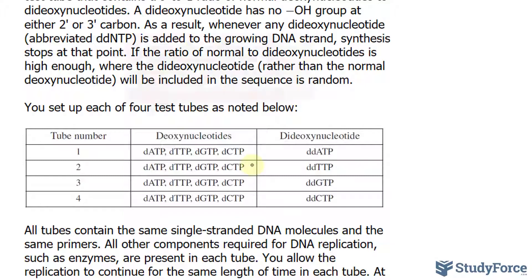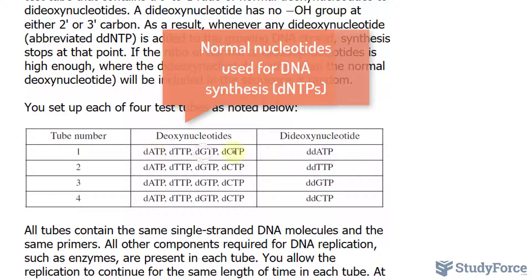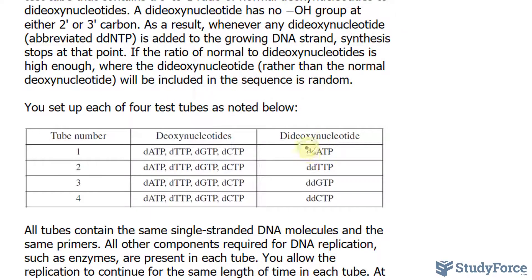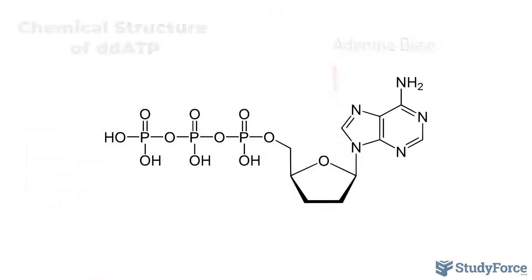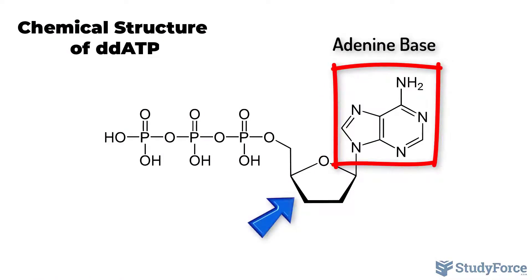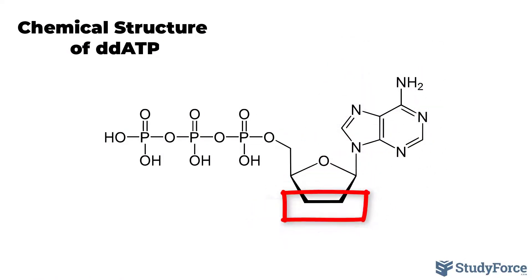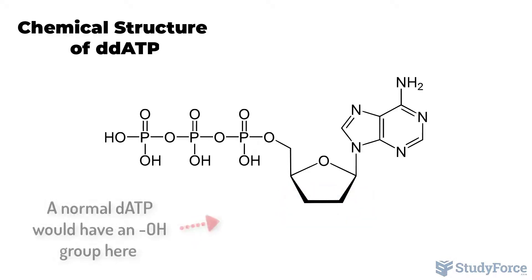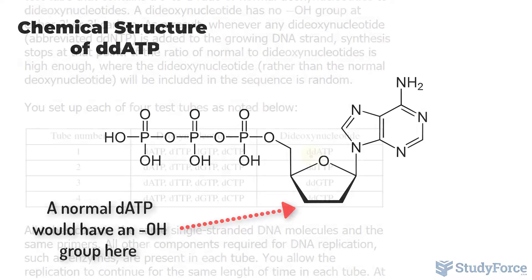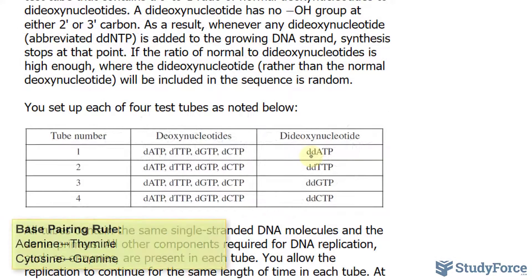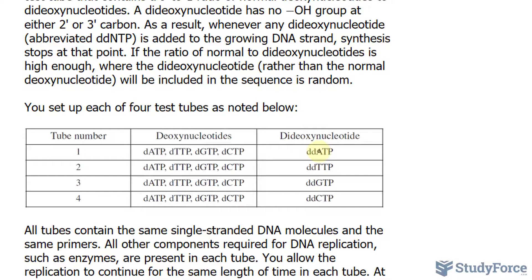In test tube number 1, we have all these deoxynucleotides added to the mix, plus this dideoxynu­cleotide. This dideoxy has the base adenine. But remember, the sugar molecule is modified to not contain an OH on the 2 prime and 3 prime carbon. So if this molecule happens to base pair with thymine along the single-stranded DNA molecule in the test tube, the DNA molecule will stop growing from that nucleotide onwards. So this is dideoxy adenosine triphosphate.